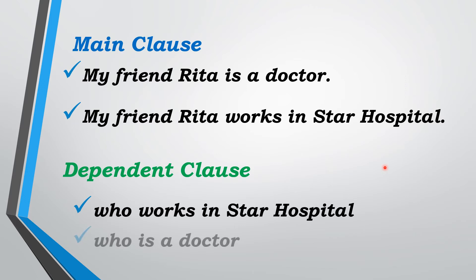When coming to the dependent clause, look at the examples: 'who works in Star Hospital' and 'who is a doctor.' A dependent clause is a group of words that cannot stand alone as a complete sentence. When you read phrases like 'who works in Star Hospital' or 'who is a doctor,' you do not get any complete meaning. It is an embedded clause inside another clause.